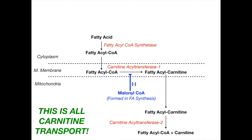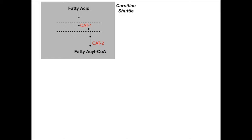Everything described is part of the carnitine transport system, or carnitine shuttle. This is technically not beta-oxidation — fatty acid oxidation is what comes after, once fatty acyl-CoA is inside the mitochondria. The fatty acid went through the membrane via CAT-1, into the mitochondria via CAT-2, and now the fatty acyl-CoA is finally ready for beta-oxidation.